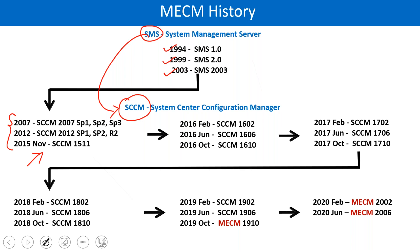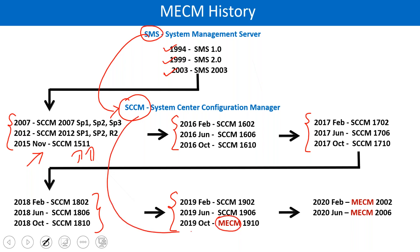From here, they started giving names as year and month. So 15 is year and 11 is month. These are the three versions released in 2016, three versions in 2017, three versions in 2018, and three versions in 2019. But from 2019 onwards, they changed the name again — from SCCM to MECM, Microsoft Endpoint Configuration Manager.